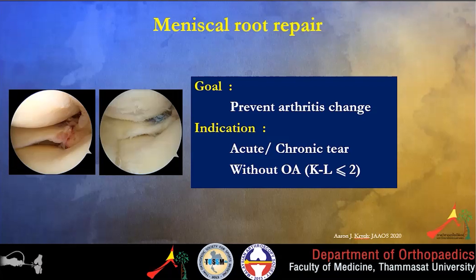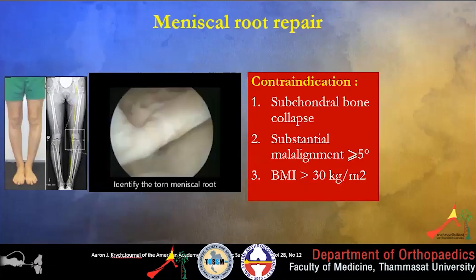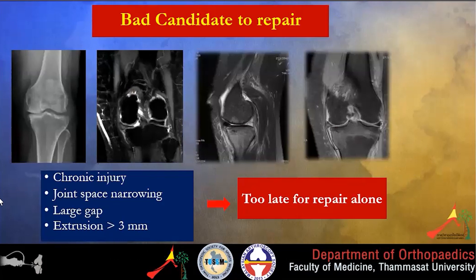Good candidates for medial meniscus root repair are those in an acute situation, evidenced by bone marrow edema on MRI, with no joint space narrowing and extrusion less than 3 mm. Do not perform root repair if there is subchondral bone collapse, substantial malalignment of more than 5 degrees, or BMI greater than 30, as these produce poorer outcomes. For chronic injury with joint space narrowing, large gap, and extrusion more than 3 mm, these are bad candidates for repair alone and should be combined with HTO, extrusion reduction, or root reconstruction.